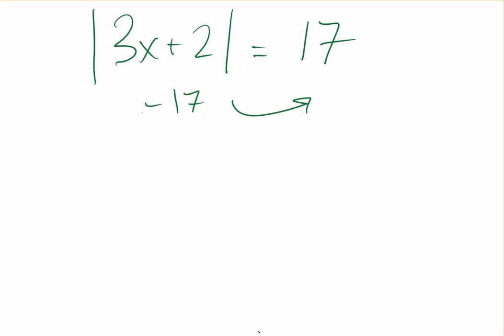So let's set up two equations. We're going to set up 3x plus 2 equals 17, and 3x plus 2 equals negative 17. And that's just because there are two answers to this equation. So we just solve this. You already know how to do this.